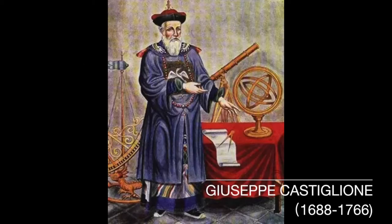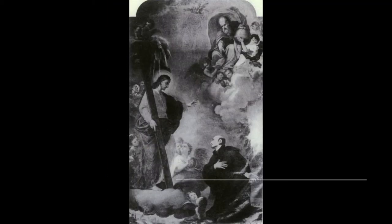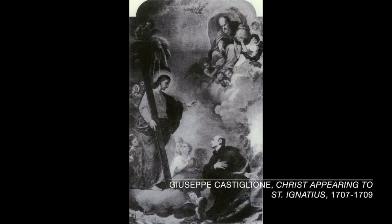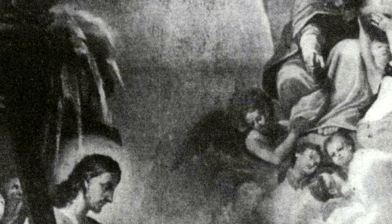Giuseppe Castiglione, an Italian Jesuit and court painter in China, is one example to show a possible scenario where whole different cultures encountered. He received professional training in art in Italy. It is said that his good skills and experiences of working for various patrons and Portuguese rulers made him be chosen to serve the emperor in China.